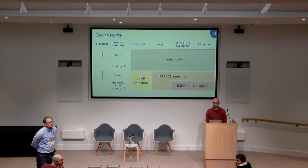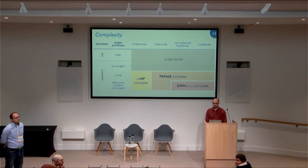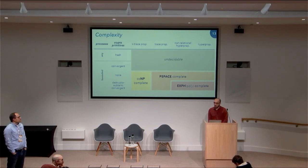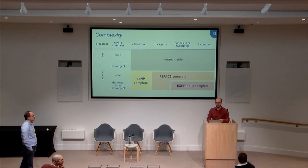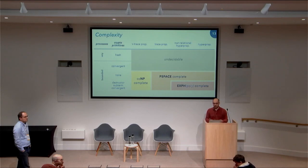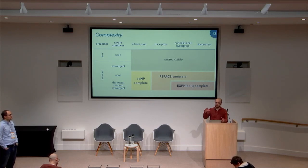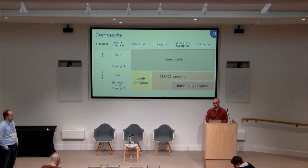Question: Are there cases where considering adversarial behaviors actually makes the problem easier, similar to how lossy systems can become more decidable? Answer: Perhaps in degenerate cases — if the adversary completely breaks the system, there's nothing to verify. But in general, the problem doesn't become easier, because the rewriting system modeling cryptography introduces several interacting layers of Turing-complete mechanisms. The adversary causes everything to blow up, even in simple cases.